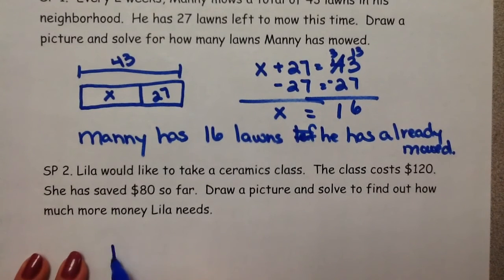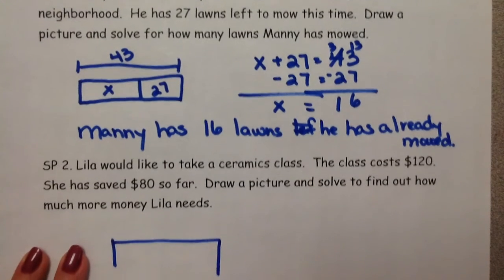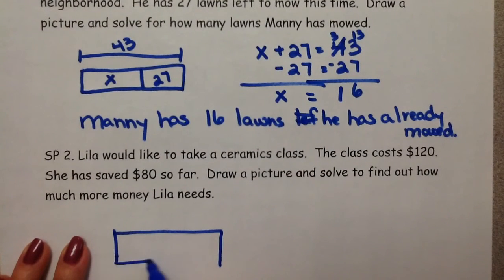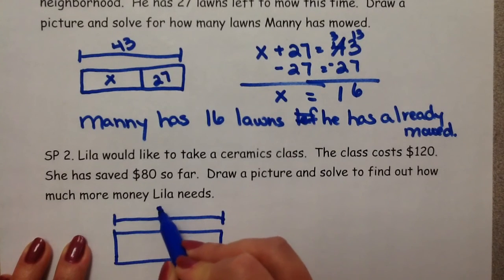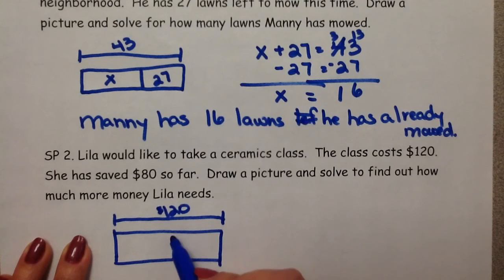Well, again, we would draw a rectangle. Up here is our total amount. In this case, we'd need $120. We'd divide this into however many pieces we need. In this case, we only need two because she has 80 so far. What we don't know is how much more she needs.